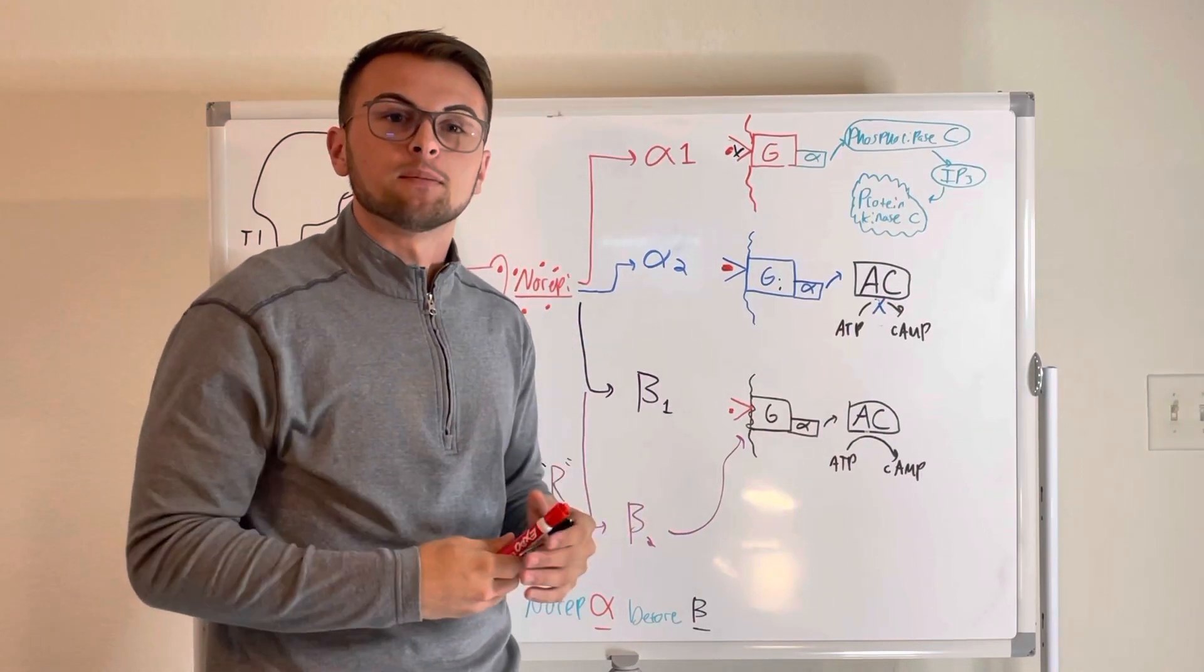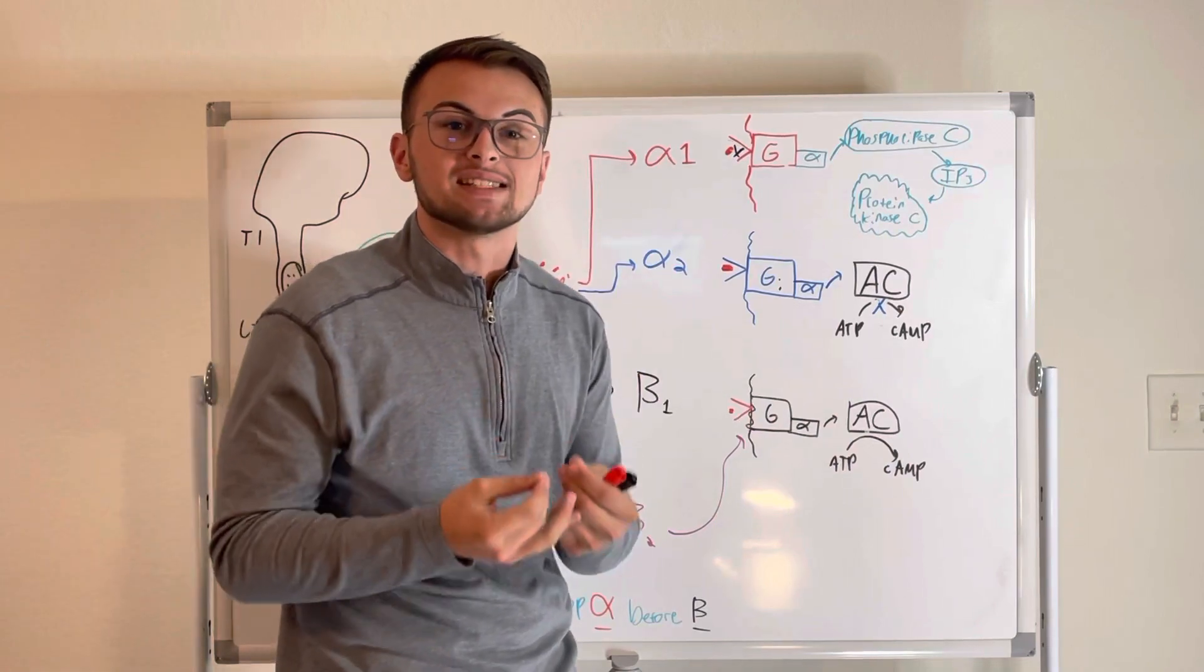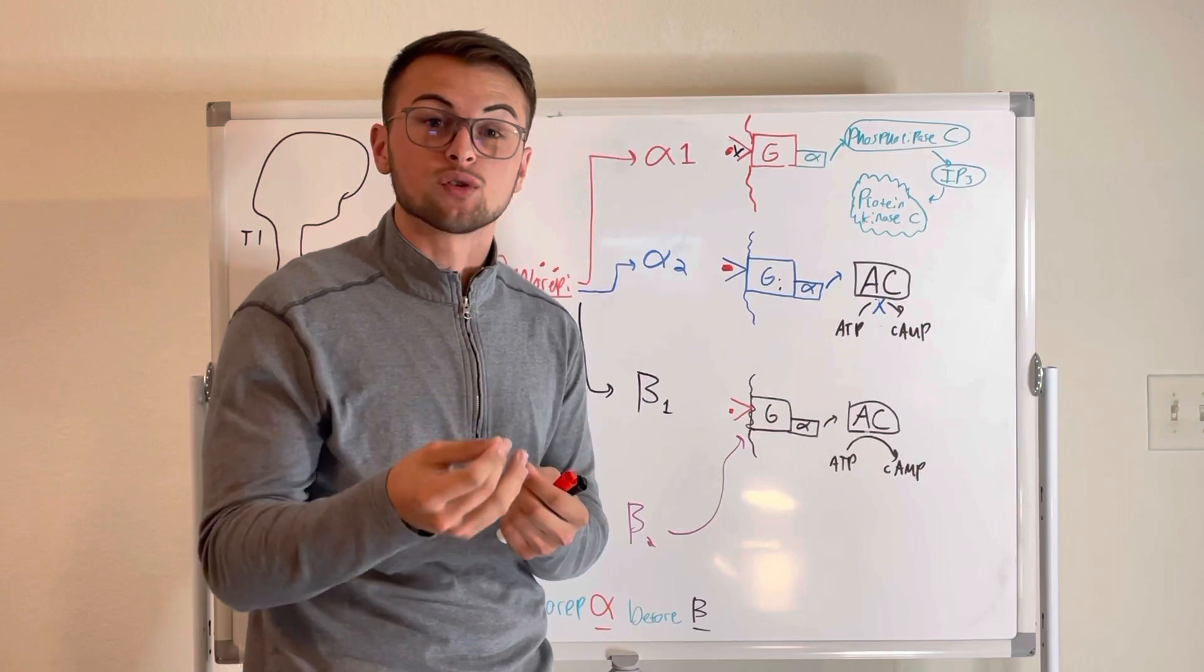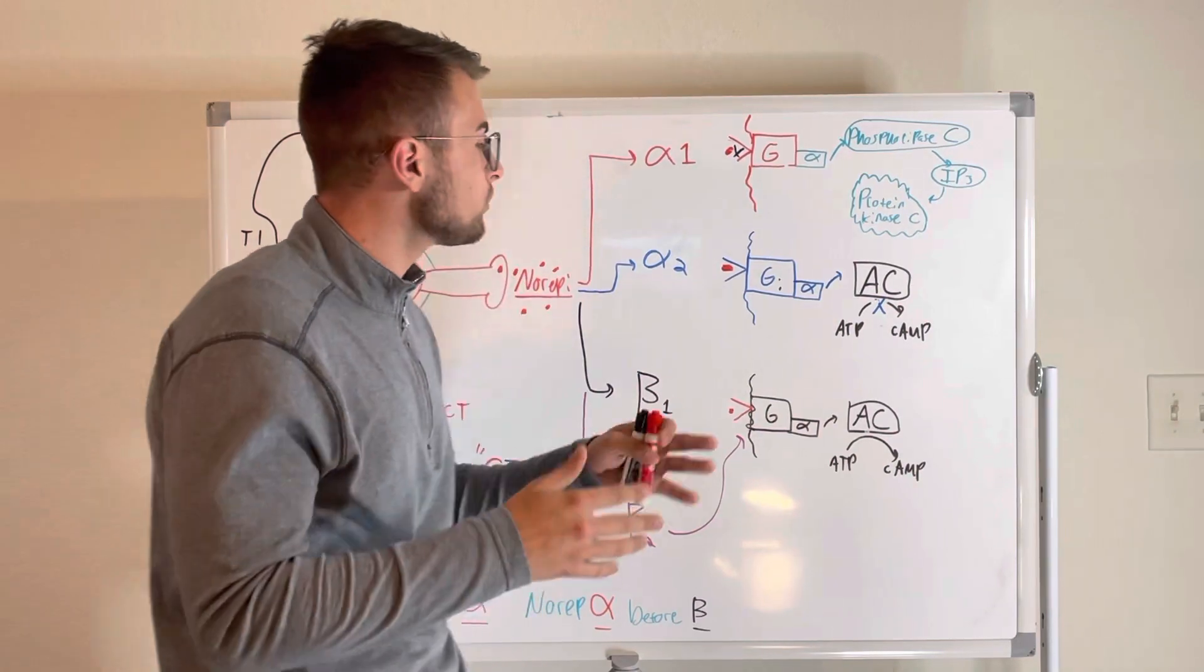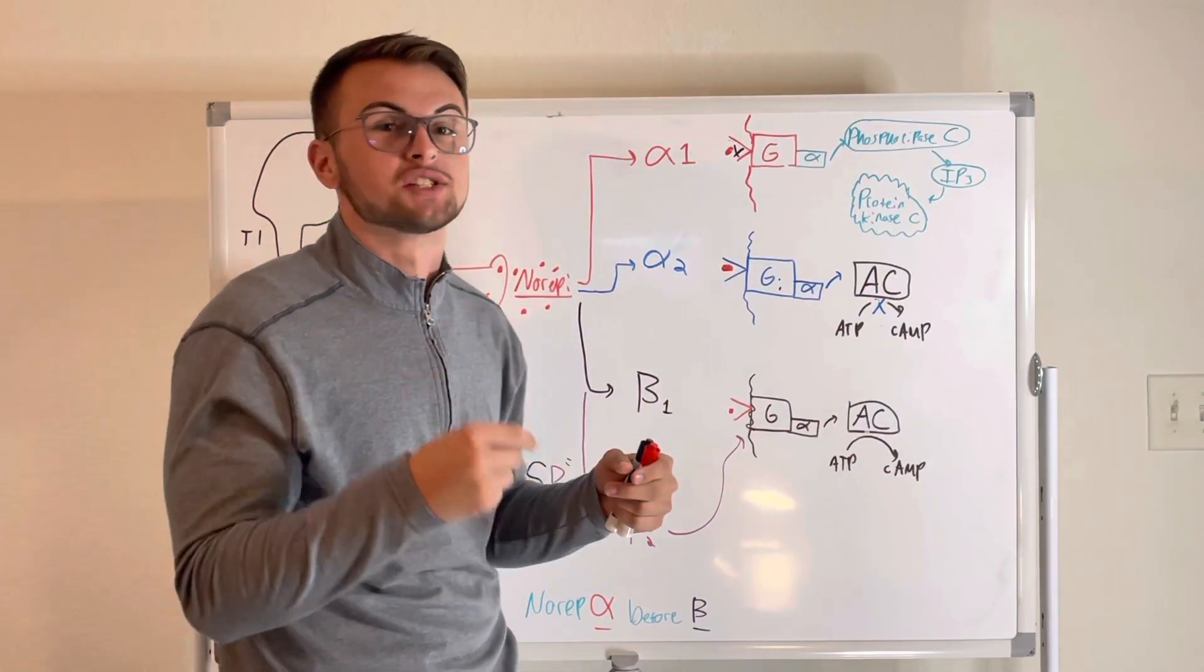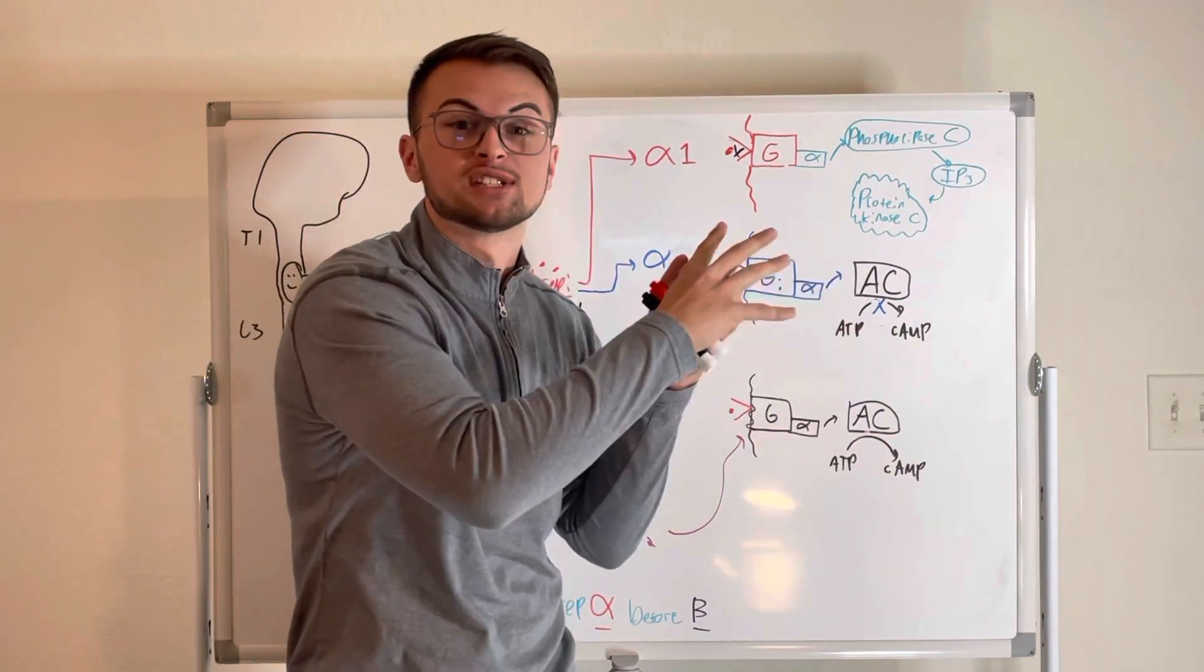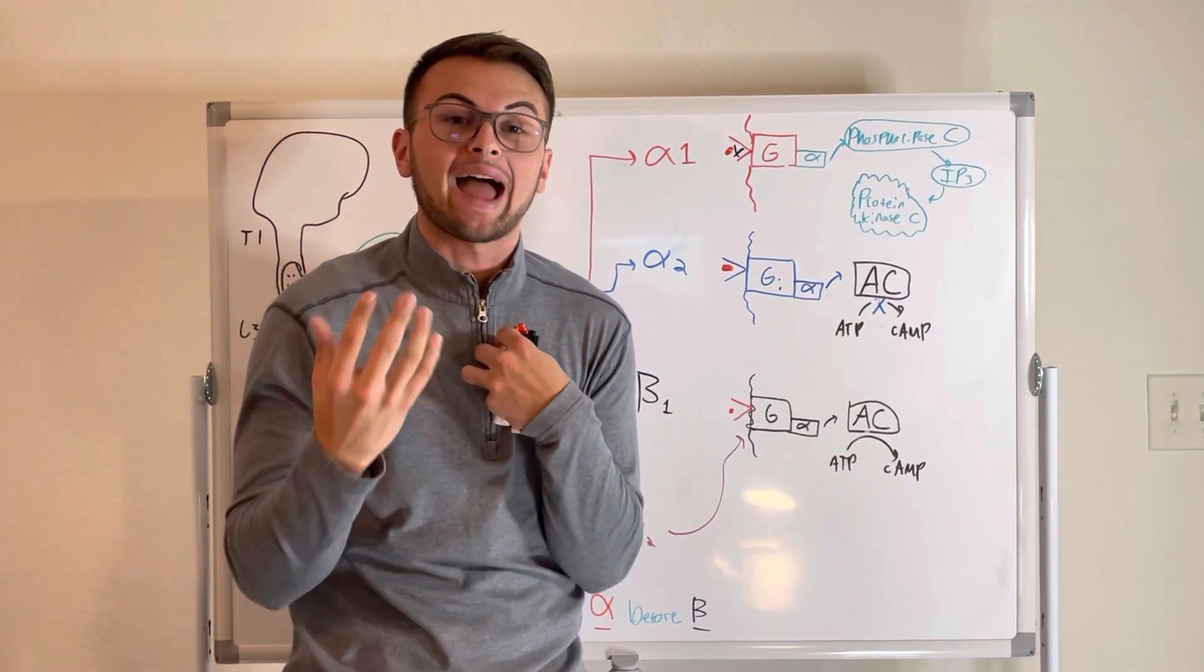So, for example, if we give an alpha-2 agonist like clonidine, it decreases the amount of norepinephrine which is released, which will cause a decrease in blood pressure and a decrease in pain. So these alpha-2 receptors are activated when we are using our sympathetic nervous system too much. Basically, alpha-2 receptors help us conserve our norepinephrine so that we don't run out.